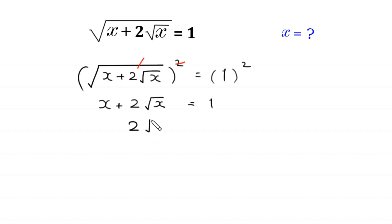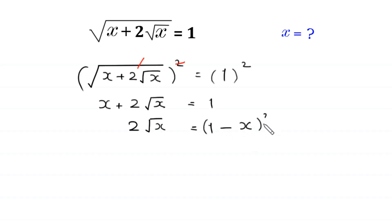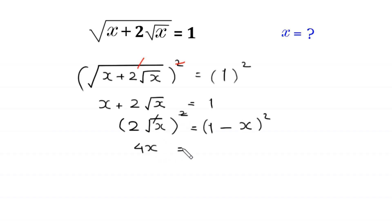At the left side we have 2 times square root of x is equal to 1 minus x. This positive x becomes negative x on the right side. Now we take the square of both sides again. Square of 2 is 4, and the square cancels with the square root, leaving 4x equal to (1 minus x) squared.